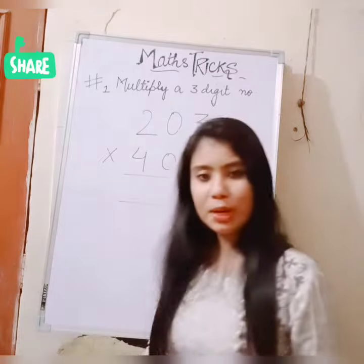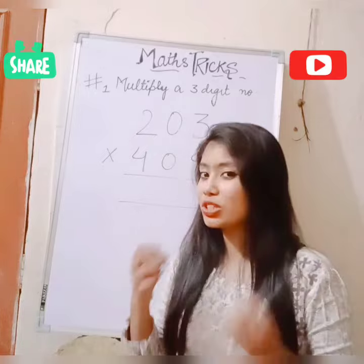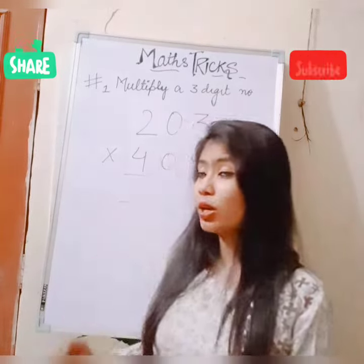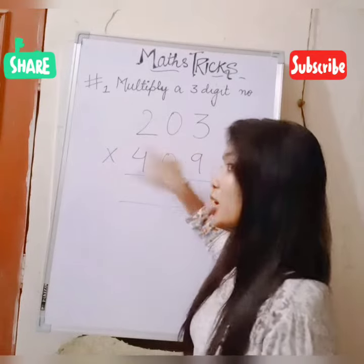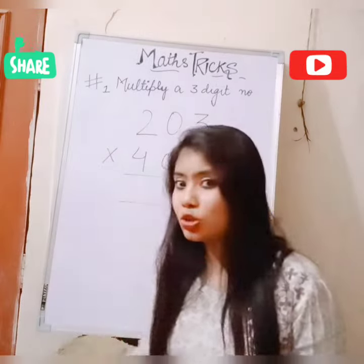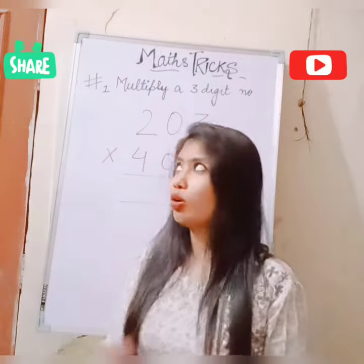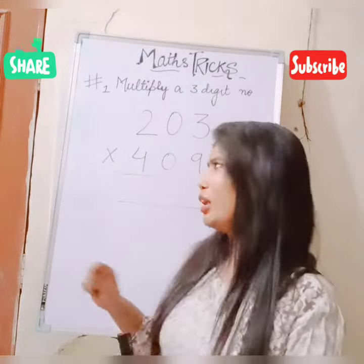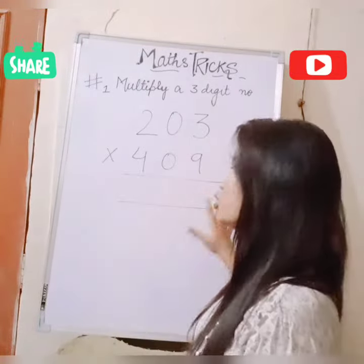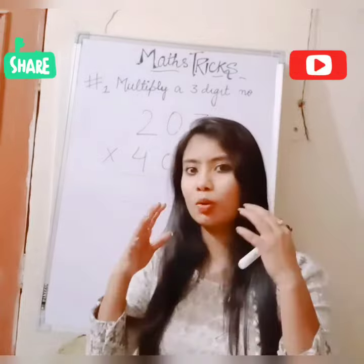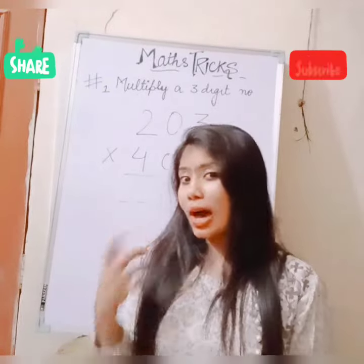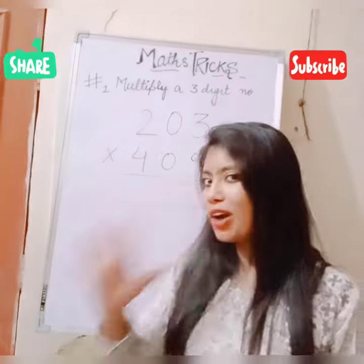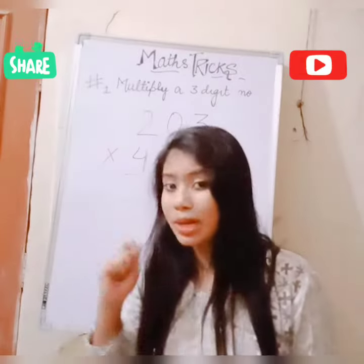So guys, today I am going to share some tricks to multiply a 3-digit number in which 0 is at the tens place. We are going to multiply these digits — normally we would need a calculator or solve it manually, which takes more time. So let's see how we can complete these questions within a few seconds.